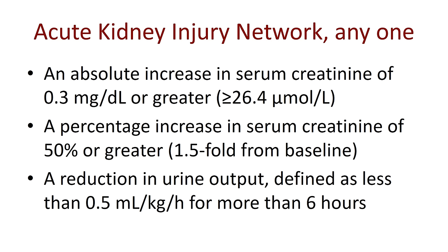Another possibility is acute-on-chronic renal failure — someone may have a degree of chronic kidney disease (CKD) and then get a superimposed AKI on top of that. This results in a percentage increase in serum creatinine of 50% or greater (1.5-fold from the person's baseline). If we know their baseline creatinine and it rises 50% acutely, that is also classified as an acute kidney injury.